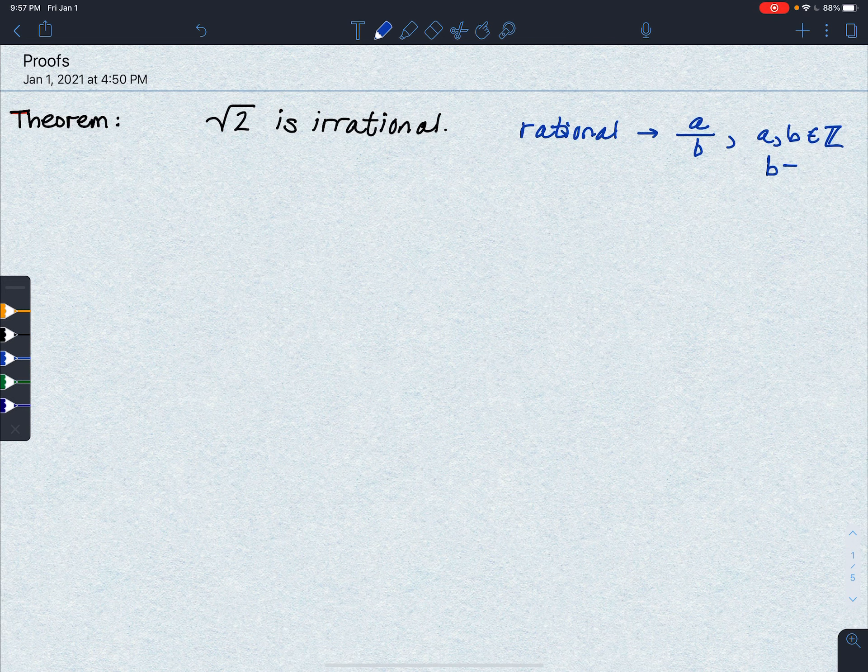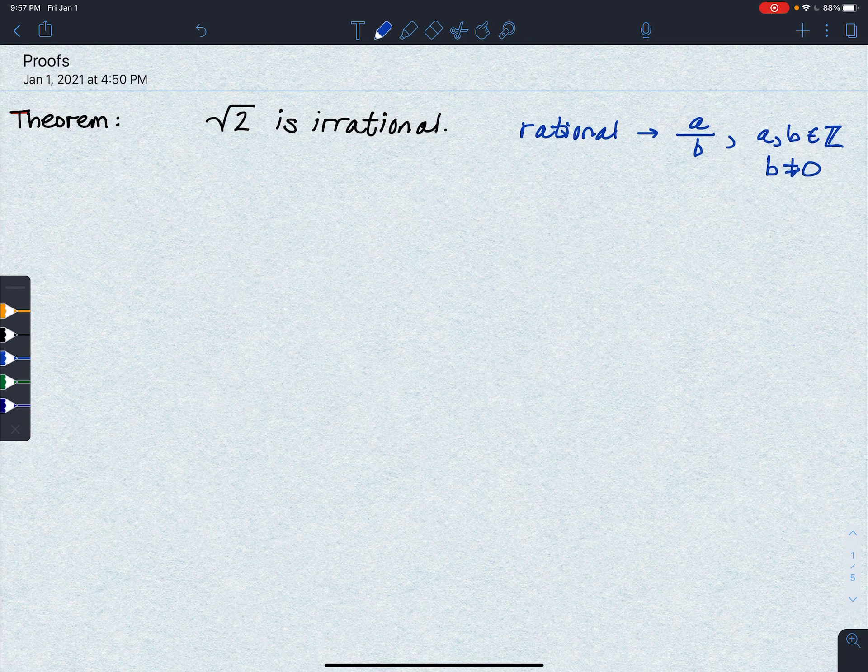So this is going to be set up as a proof by contradiction, meaning that we're going to assume something, and we're going to come up with two things that we also assume that cannot happen at the same time, thus forming a contradiction.